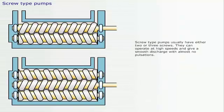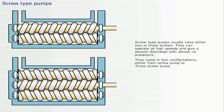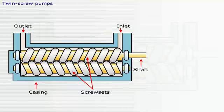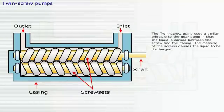Screw type pumps usually have either two or three screws. They can operate at high speeds and give a smooth discharge with almost no pulsations. They come in two configurations, either twin screw pump or three screw pump. The twin screw pump uses a similar principle to the gear pump, in that the liquid is carried between the screw and the casing. The meshing of the screws causes the liquid to be discharged.